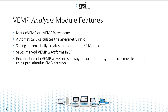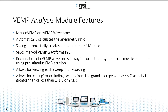The VEMP analysis module also includes the ability to use rectification, which is a way to correct for asymmetrical muscle contraction during C VEMP collection using pre-stimulus EMG activity. It also allows you to view each sweep in the recording and the ability to cull or exclude sweeps — either manually or automatically — from the grand average based on standard deviation from the mean EMG activity. I'll show you that in a moment.